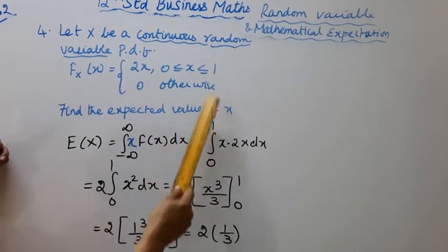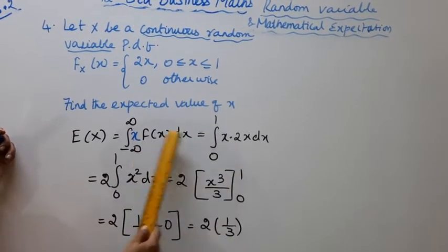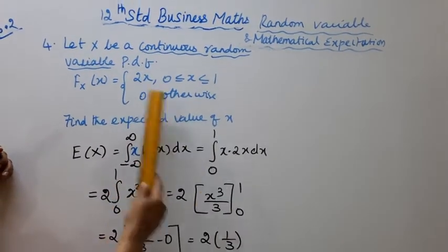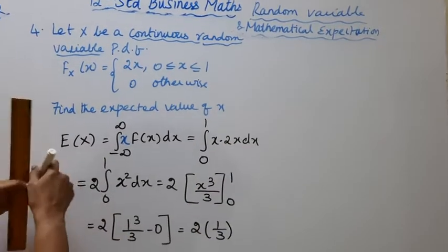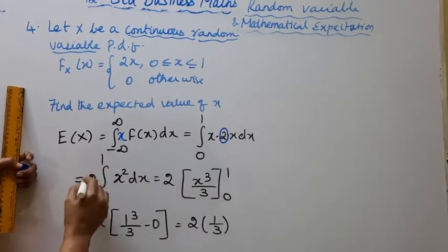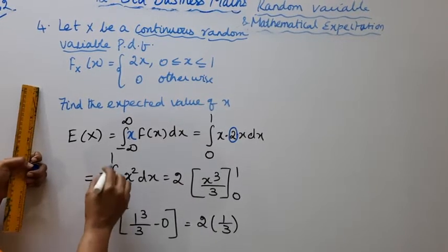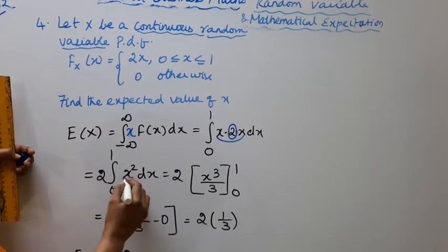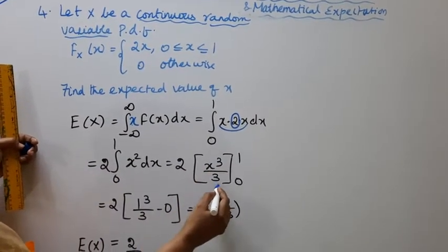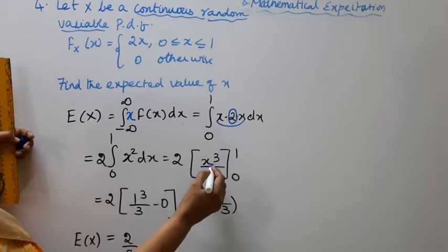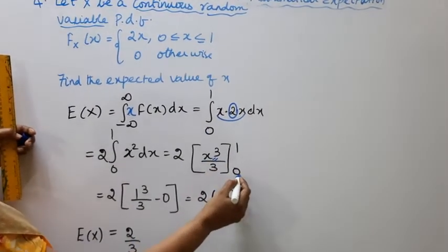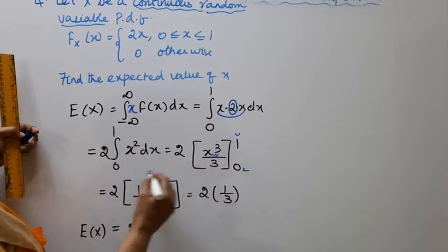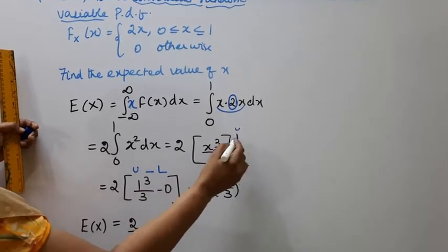Upon limits 0 to 1, integration of 0 to 1, x into f(x) dx. f(x) is 2x, so integration 0 to 1 of x into 2x dx equals integration 0 to 1 of 2x squared dx.